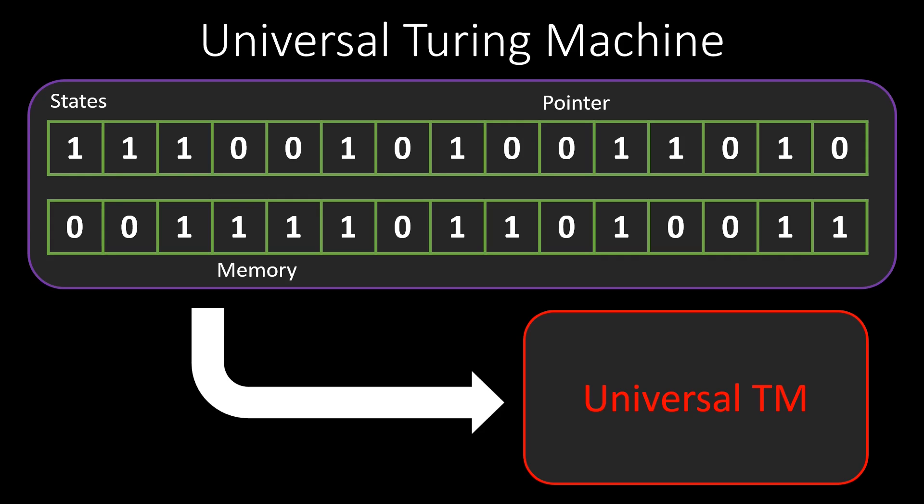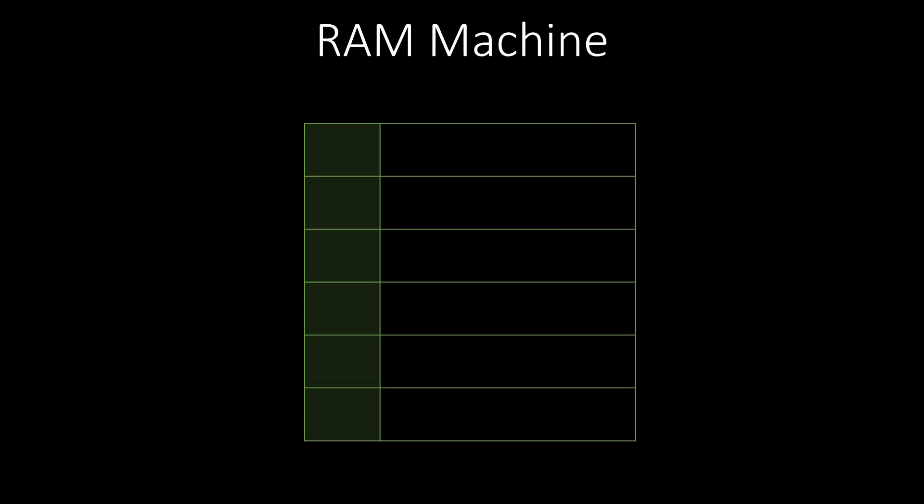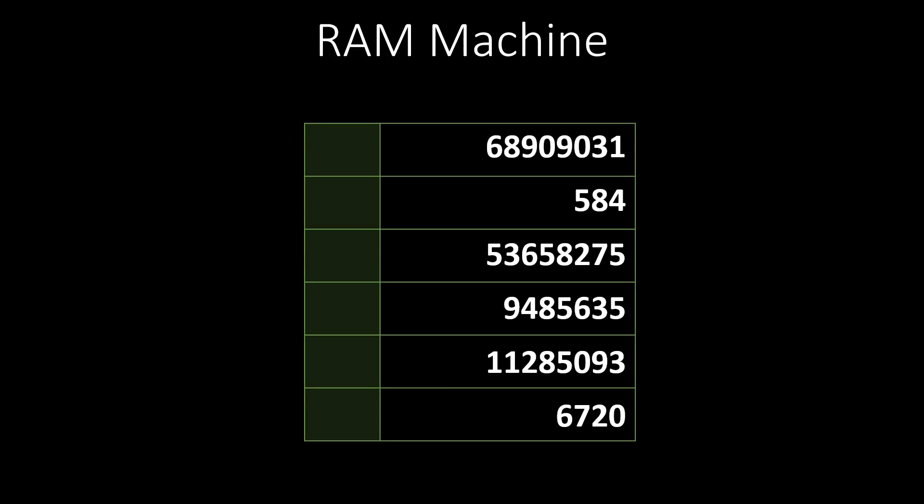The most significant difference is that we can only move one memory cell at a time. This is why there also exist more realistic machine models, like for example the RAM machine. A RAM machine has registers instead of cells, which can store integer values. Additionally, the machine can address these registers indirectly through pointers instead of moving in memory only one cell at a time.